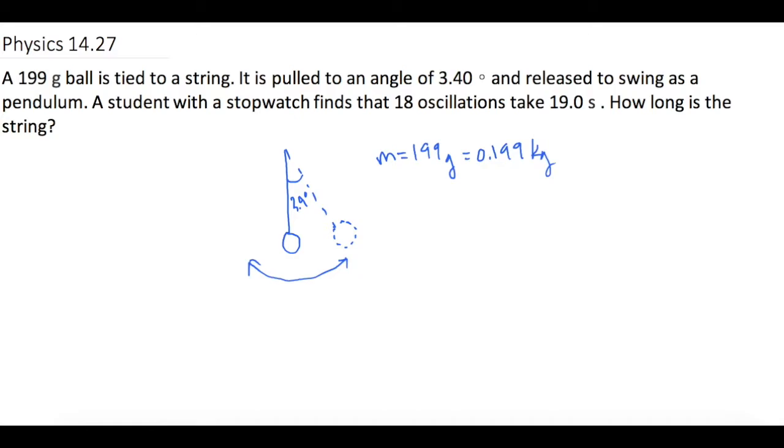So we can find with oscillations and the seconds either T or frequency. Remember T is how much time it takes per oscillation, so delta t divided by oscillations, and frequency is oscillations per time.